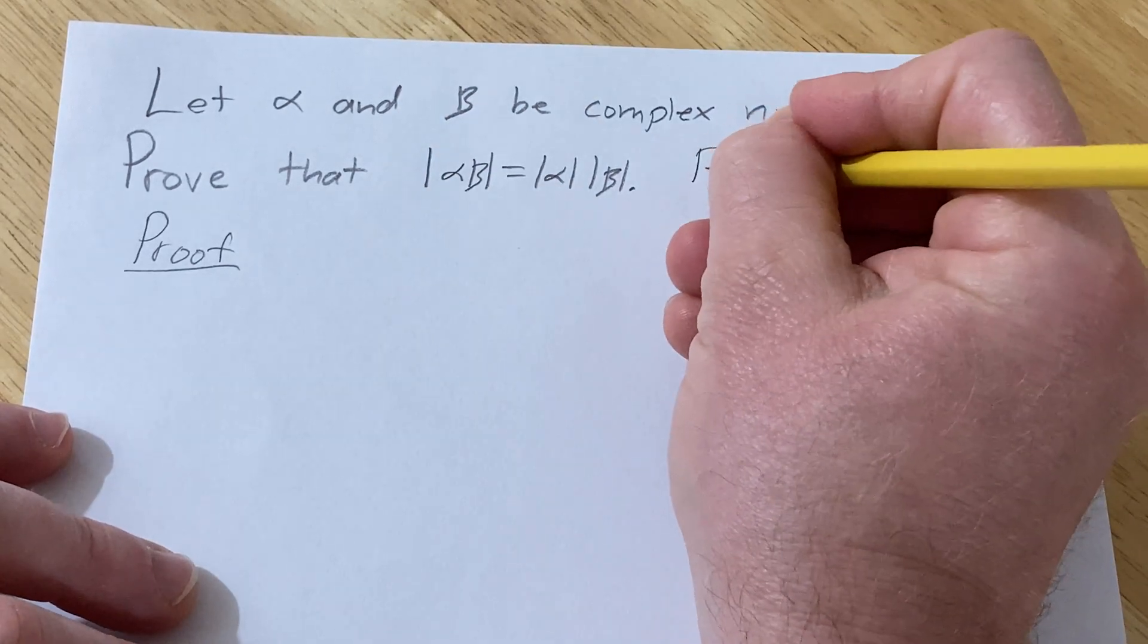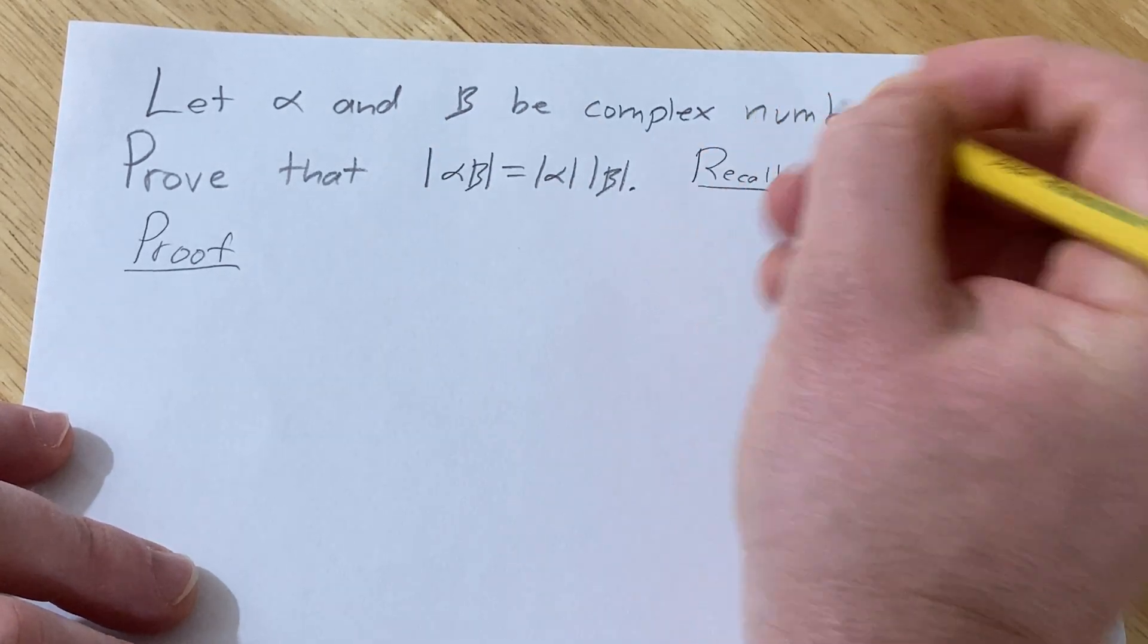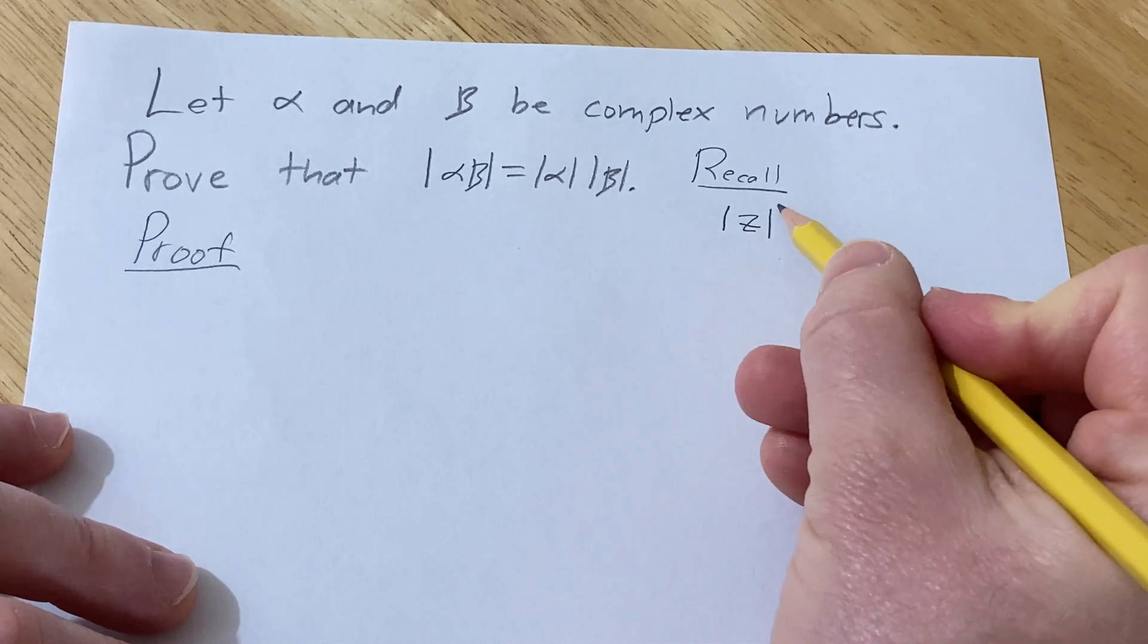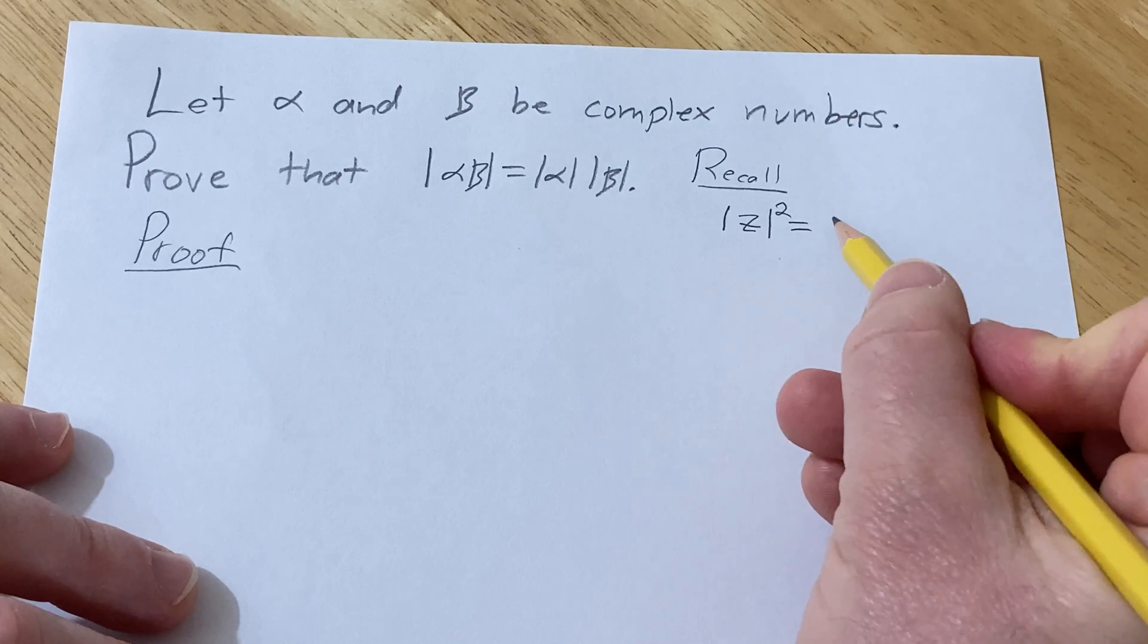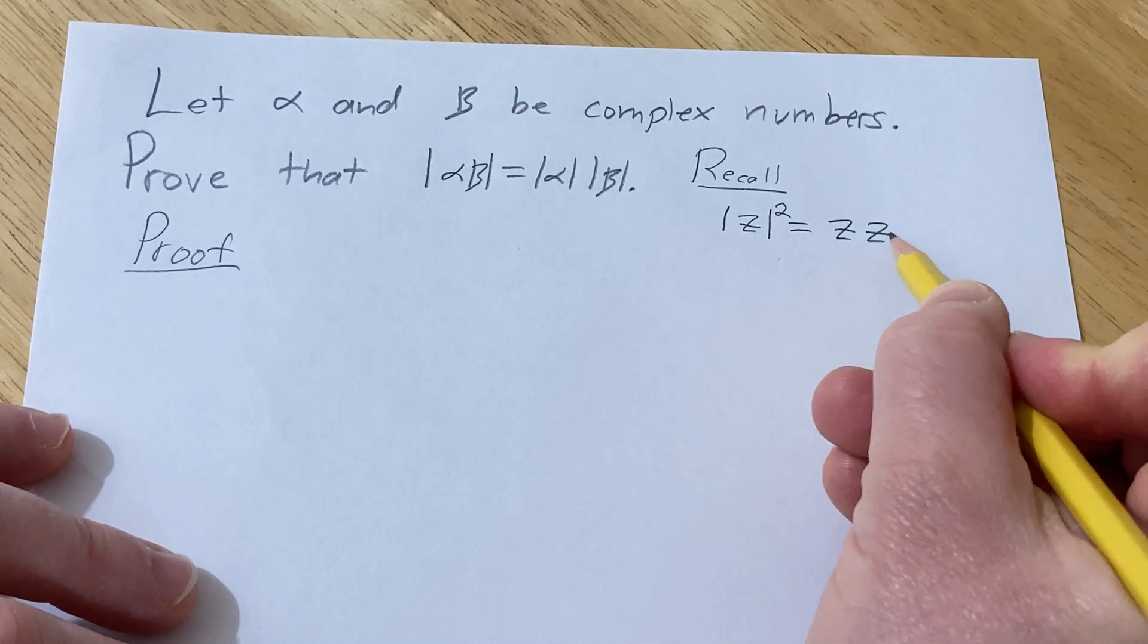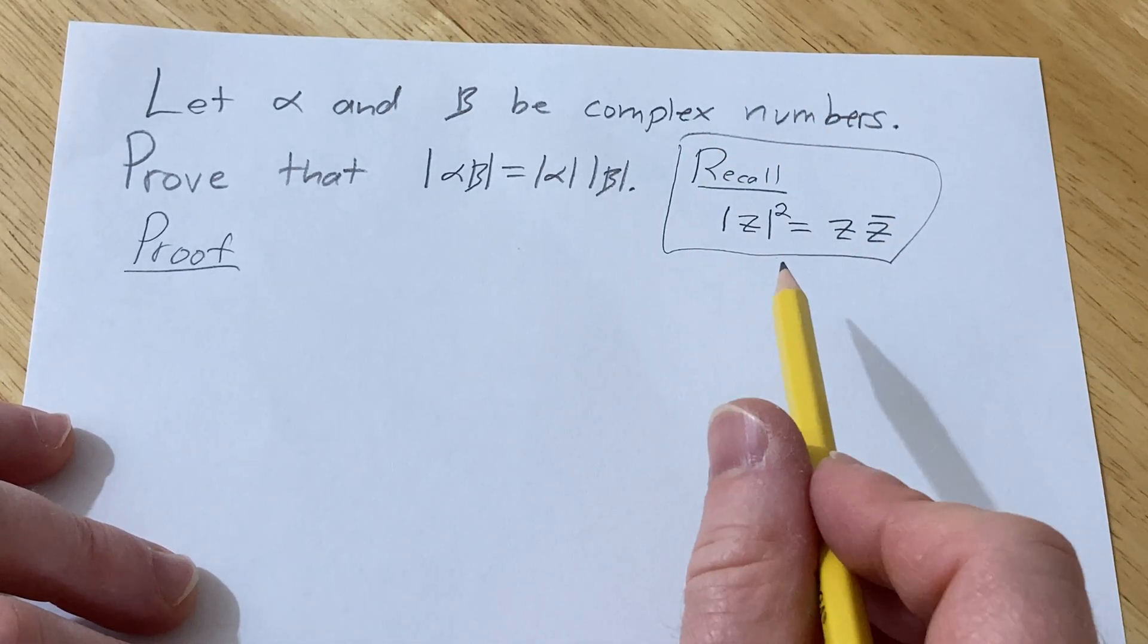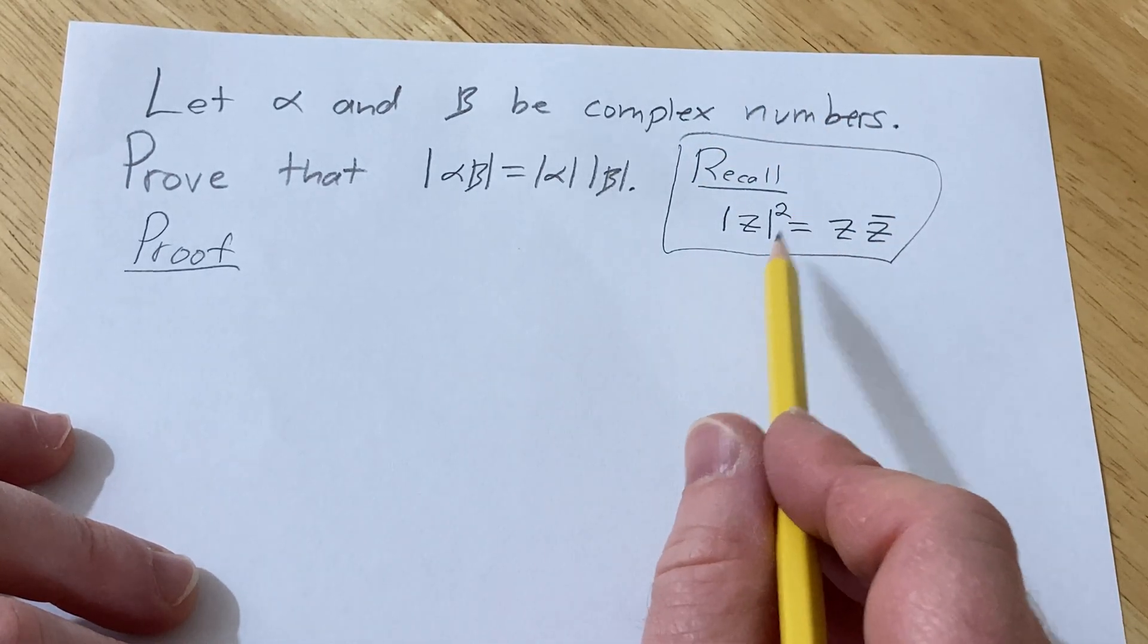So recall, if you have a complex number z, and you take the modulus and you square it, that's equal to z times the conjugate of z. So this is a very powerful formula, and it's basically what we're going to use here in this problem.